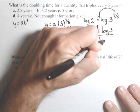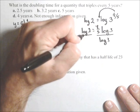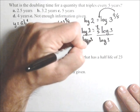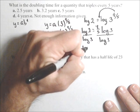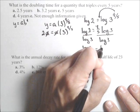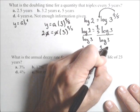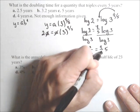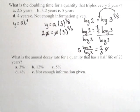So, I'll divide both sides by log of three. And, I have log of two over log of three equals t over five. Then, multiply both sides by five. And, I've solved exactly for t.